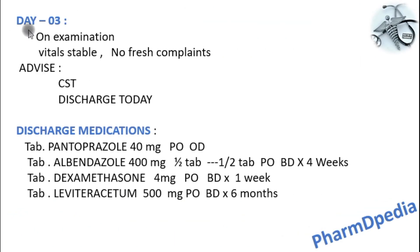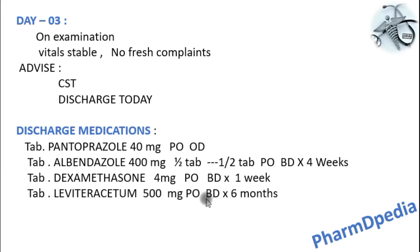On day 3, the patient's vitals were stable and the same treatment was continued; the patient was discharged. Discharge medications included Tablet Pantoprazole 40mg once daily, Tablet Albendazole 400mg BD for 4 weeks, Tablet Dexamethasone 4mg BD for 1 week, and Tablet Levetiracetam 500mg BD for 6 months. Anti-epileptics are typically prescribed in neurocysticercosis cases for 6 months up to 2 years.